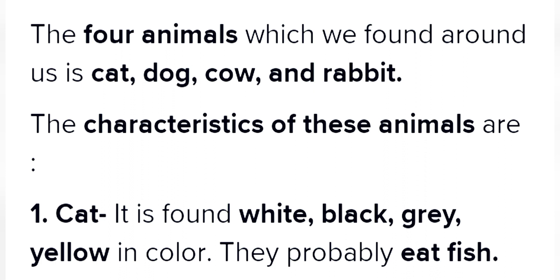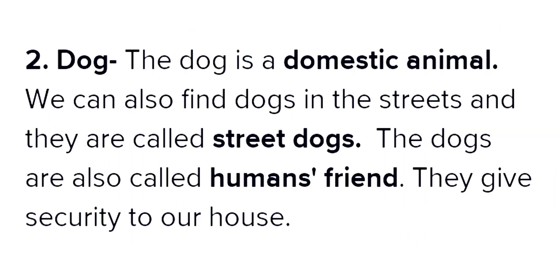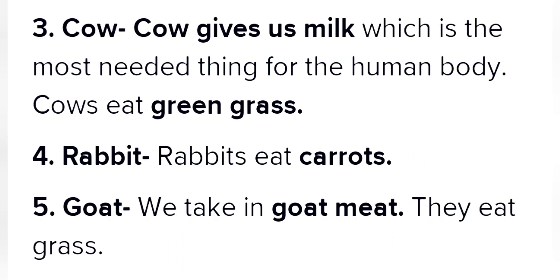Cat: it is found in white, black, grey, and yellow colors, and they mostly eat fish. Dog: the dog is a domestic animal; we can also find street dogs. Dogs are called humans' best friend and give security to our house. Cow: cow gives us milk, which is most needed for the human body; cows eat green grass. Rabbit: rabbits eat carrots. Goat: we use goat meat; they eat grass. You can write two to three animals in your notebook.